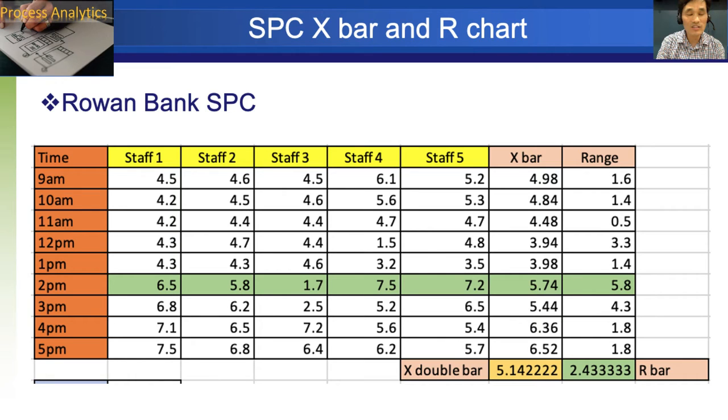To work with x bar and r chart, we need to find the x bars, which is the average of this time at nine, and that's 4.98. Range is maximum minus minimum. So maximum is 6.1, minimum is 4.5. Then you have 1.6, the difference. And then in the same way you are going to calculate the means at 10 a.m. That's 4.84 and range is 1.4. Similarly, you are going to go through all the things, then you fill out this table, and you calculate the average of this sample means, then you get 5.14 and range. The average of that is 2.43. That's r bar. So x double bar and r bar are calculated here.